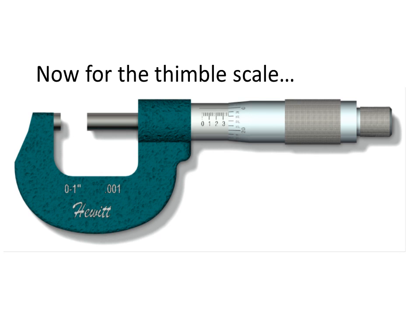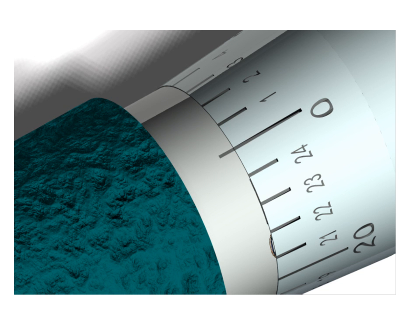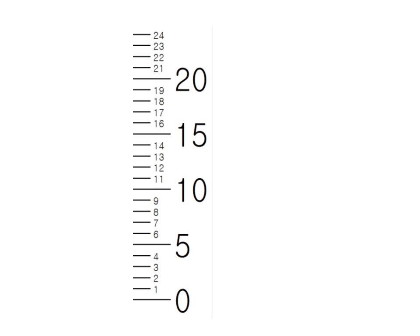Now the other scale is the thimble scale. You'll see that it starts at zero and goes from one, two, three, four all the way around to twenty, twenty-one, twenty-two, twenty-three, twenty-four. So these are thousandths of an inch. If this says one, this is one thousandth, 0.001. Five would be 0.005.